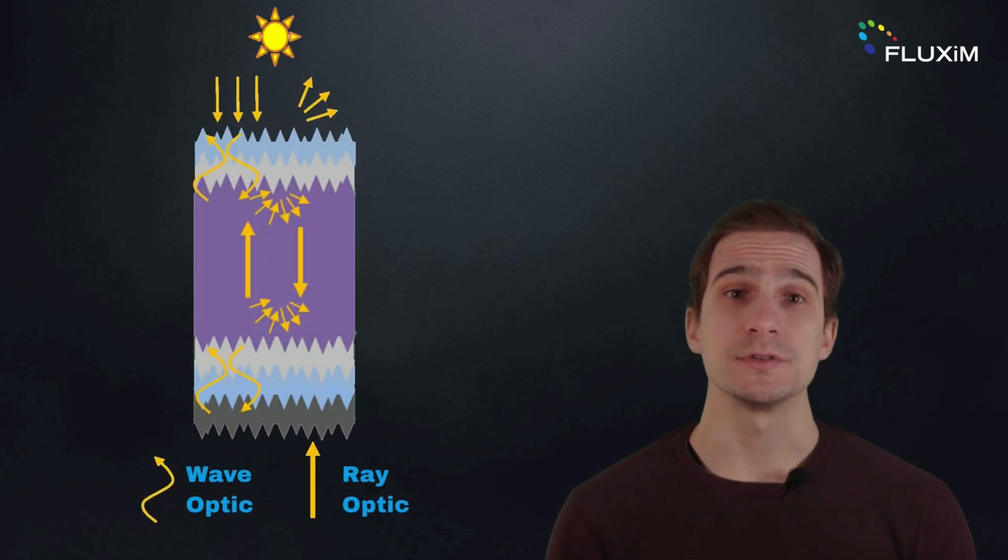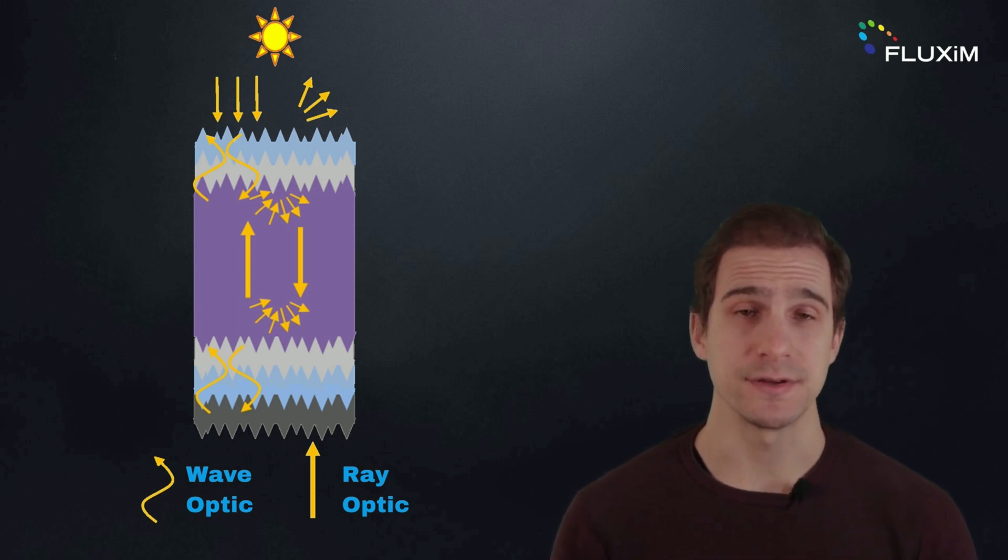That's where computer simulations come in handy. From optical simulations, we can appreciate how much current can be recovered from a two-terminal silicon-perovskite tandem solar cell by adding texture interfaces.